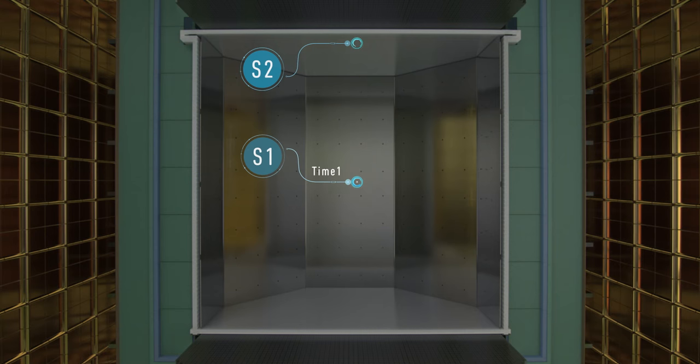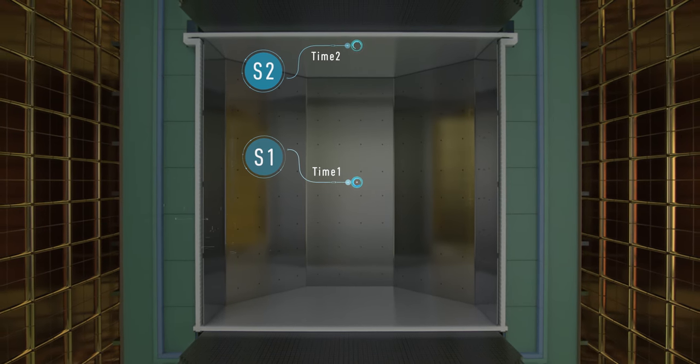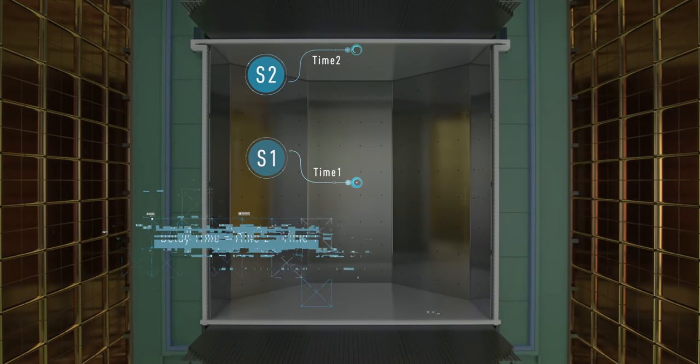This signal, S2, happens at a later time with respect to the primary scintillation signal, S1. This configuration allows for the WIMP-argon events to be accurately localized in three dimensions.